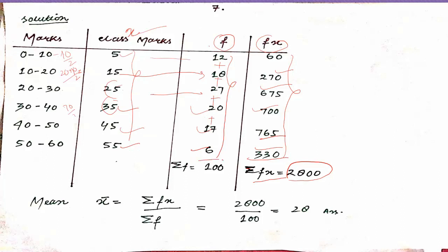Summation of f equals 100. So putting these values in: summation of f into x is 2800, and summation of f is 100, giving an answer of 28. How easy is it?